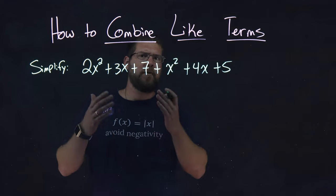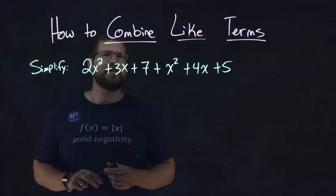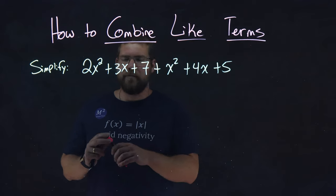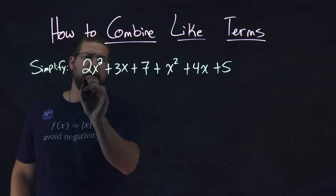First let's identify which terms are alike. Let's see which ones have x squared. We have 2x squared going on here.